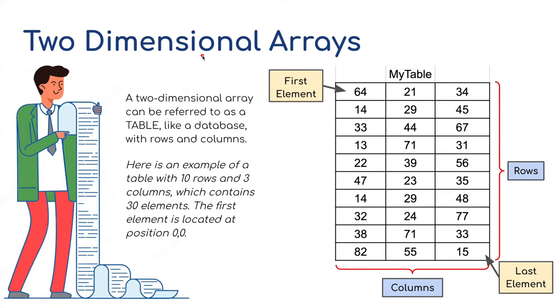We'll move on to two-dimensional arrays. A two-dimensional array can be referred to as a table, probably more so like a database with rows and columns. Here's an example of a table with 10 rows going across and 3 columns going down, which contain 30 elements, in this case 30 numbers. The first element is located at position 0, 0. So we can store a lot more items in a two-dimensional array.